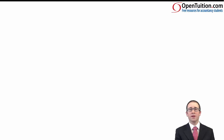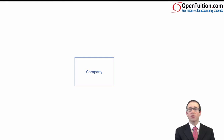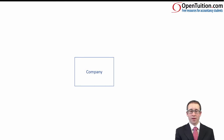Grab yourselves a separate page of paper and you can take it down as we go along, or just be eyes and ears and see that you understand it. What you've got is a box — that box is your company and you're in charge of that box. I'm going to call it ABC PLC. That company needs to increase the wealth of the shareholders — that's the fundamental corporate objective, increasing the wealth of the shareholders.